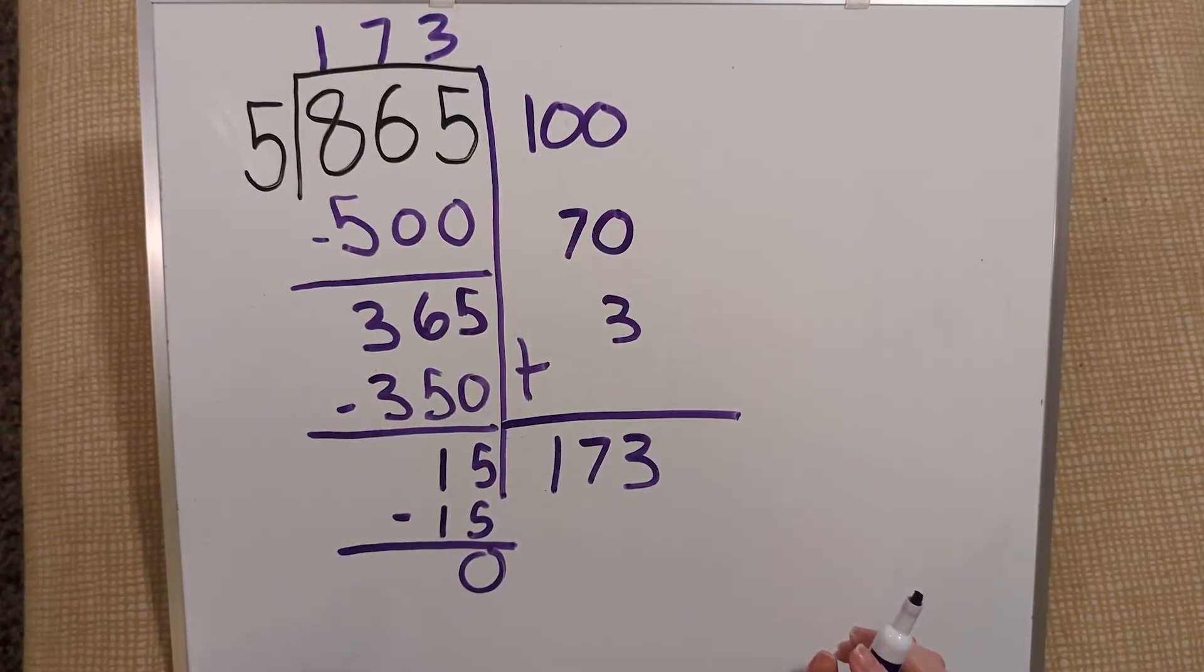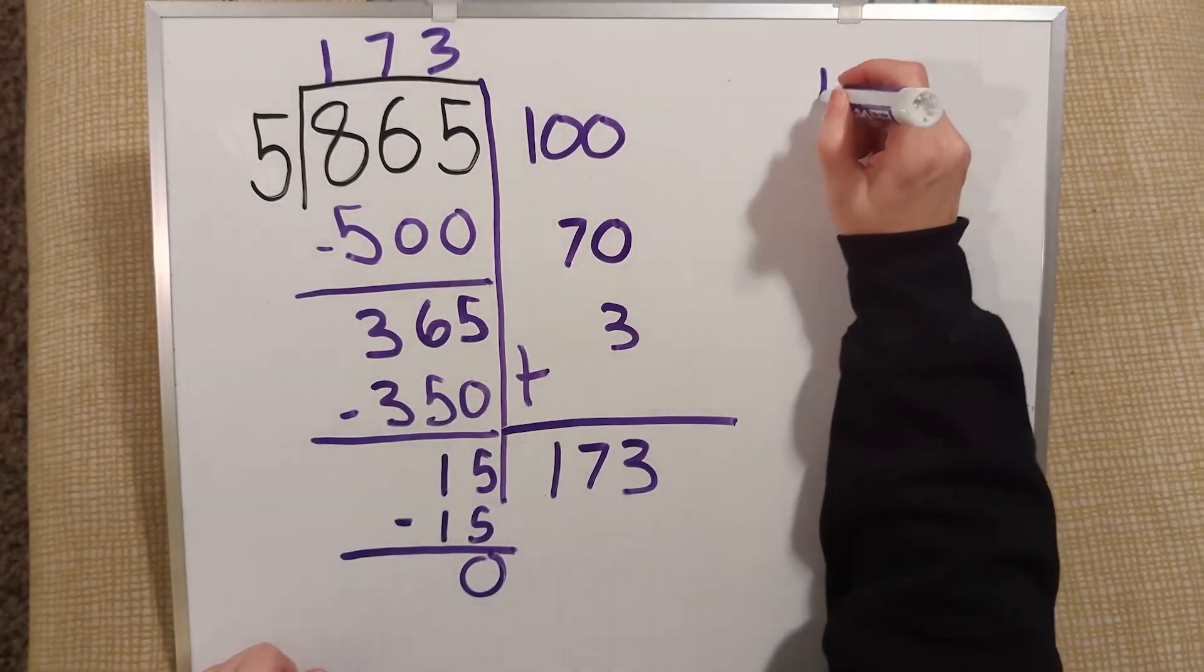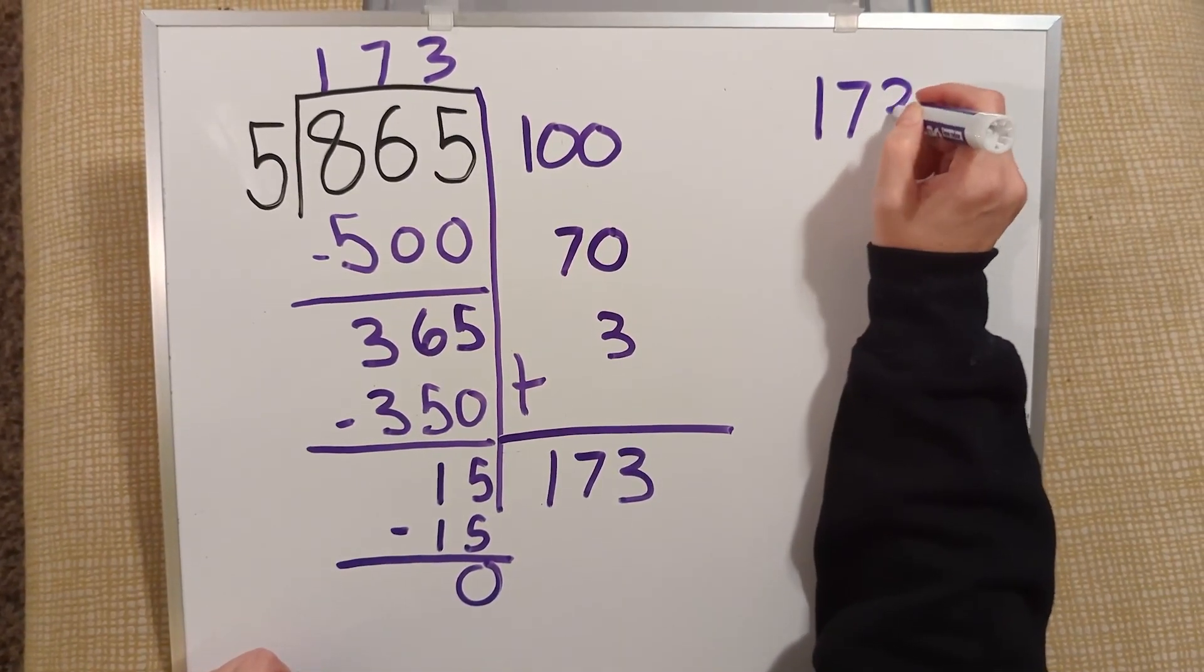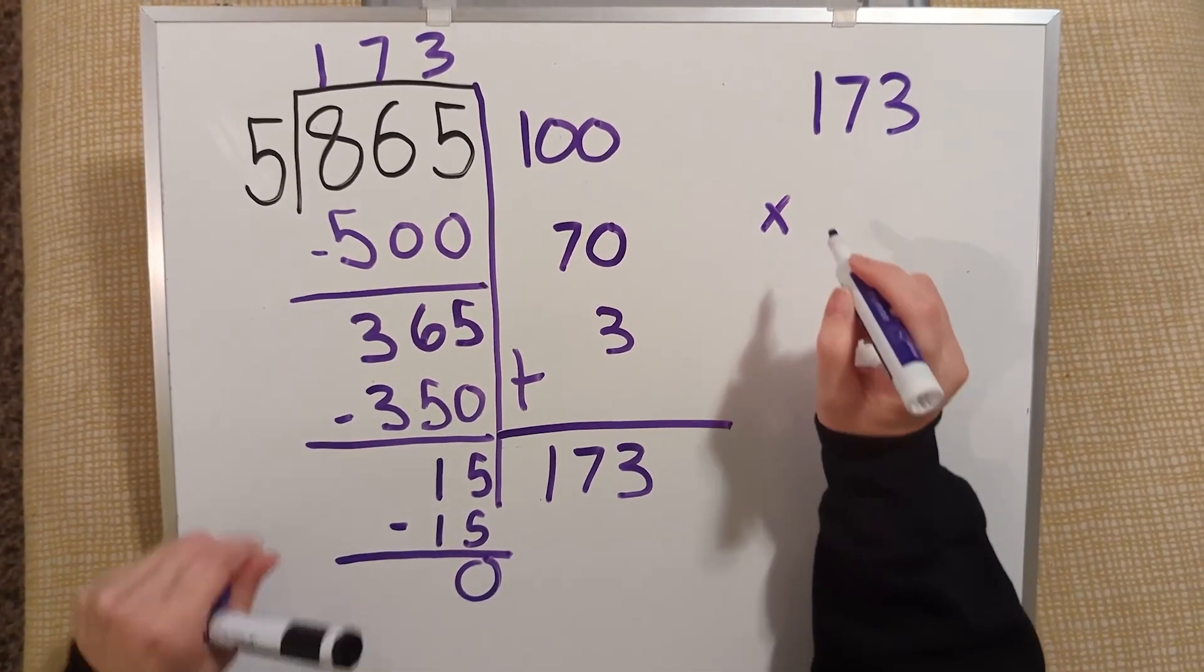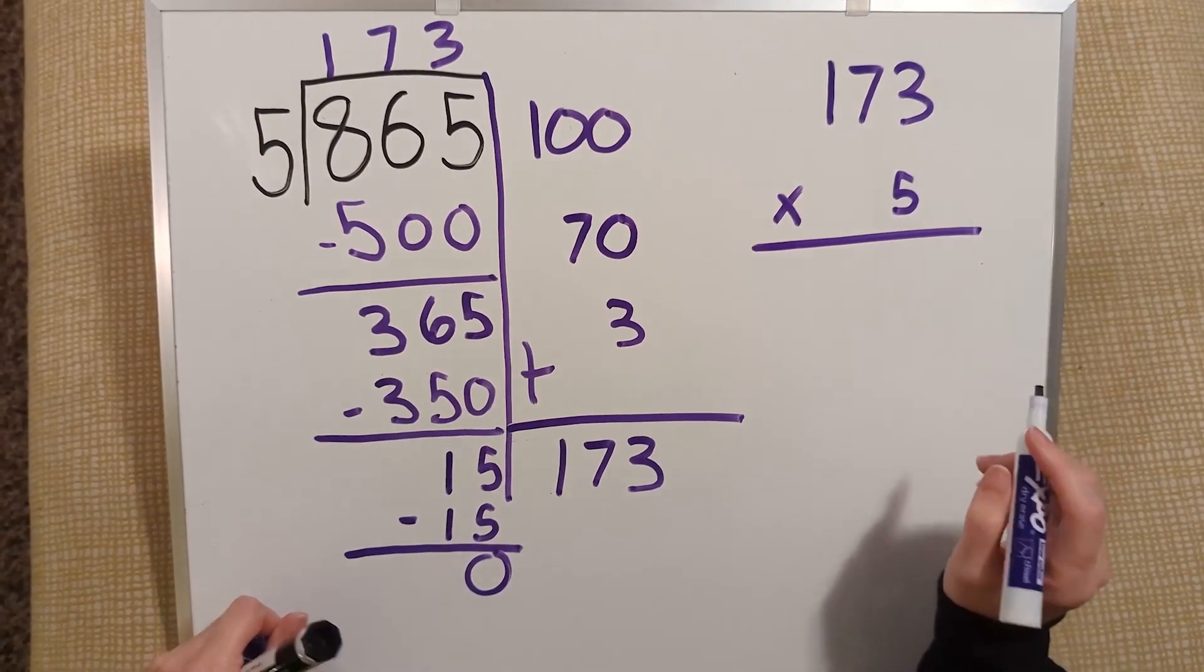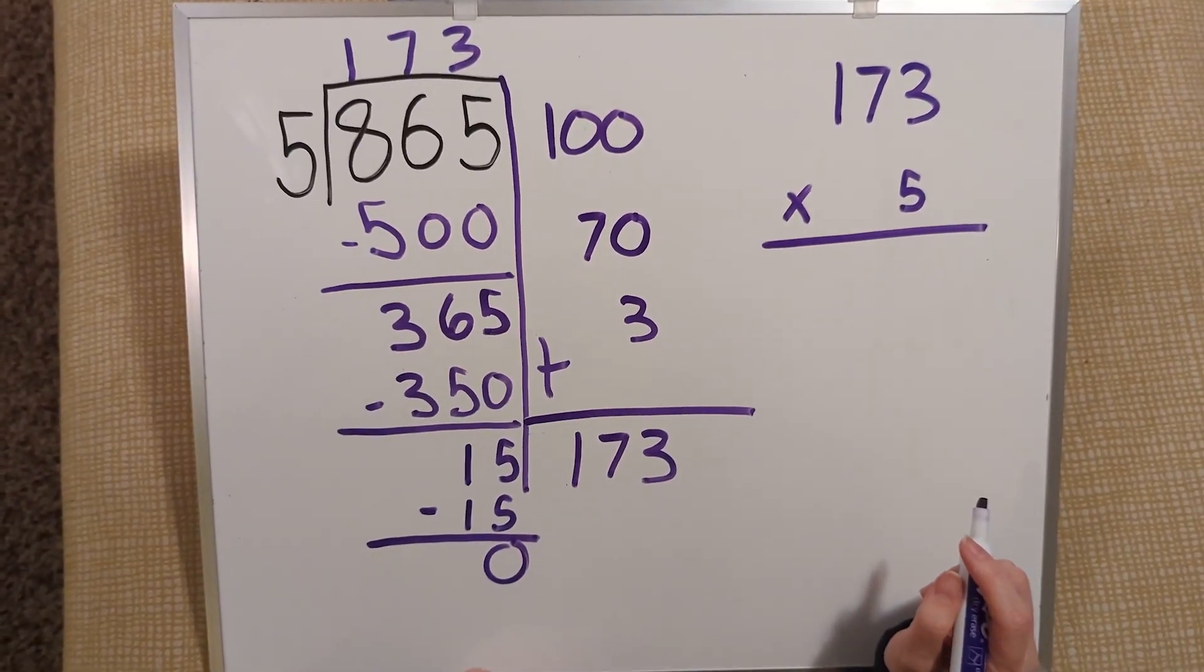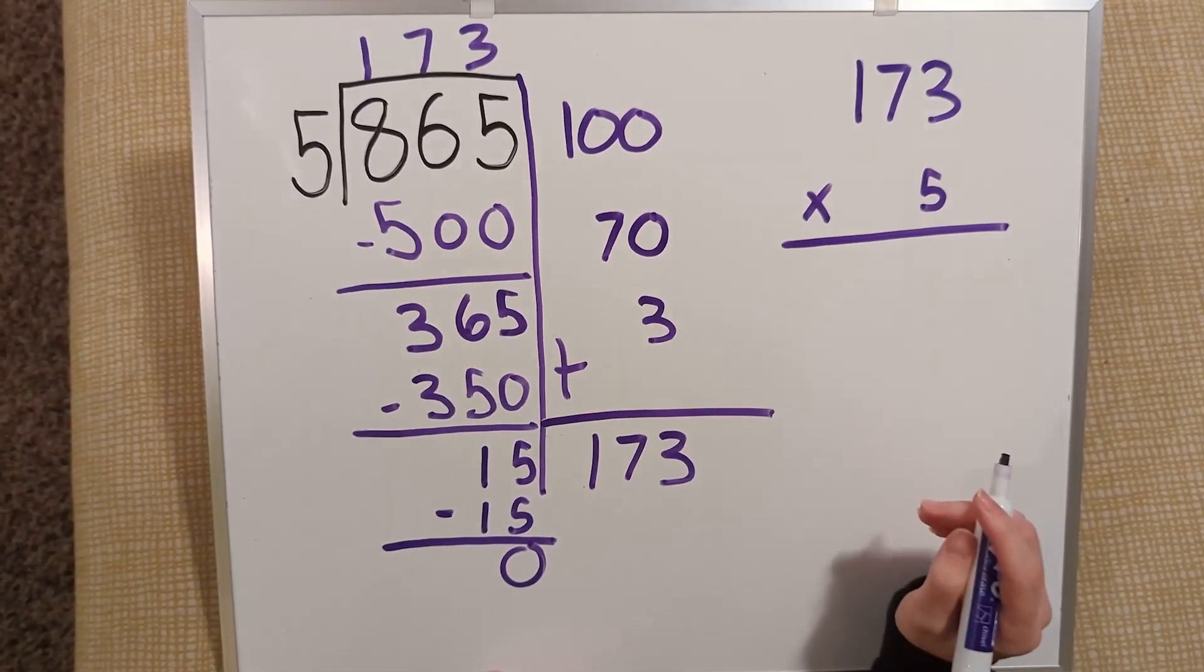I can check that by doing multiplication. 173, which is my quotient. 173 times my divisor of 5. I'm going to use partial product to solve this. I will multiply my 5 by each place value.